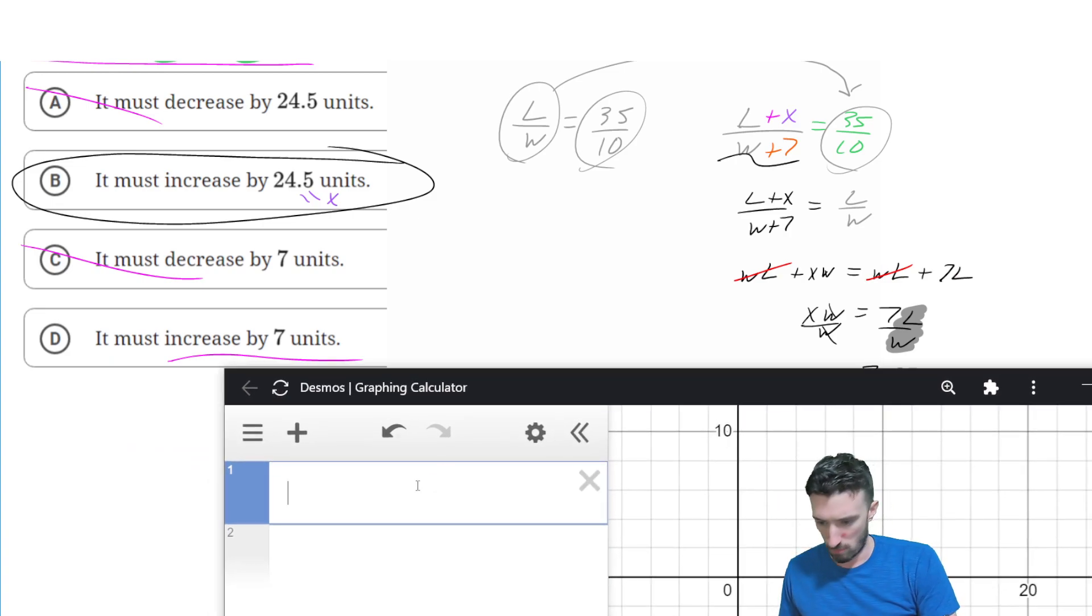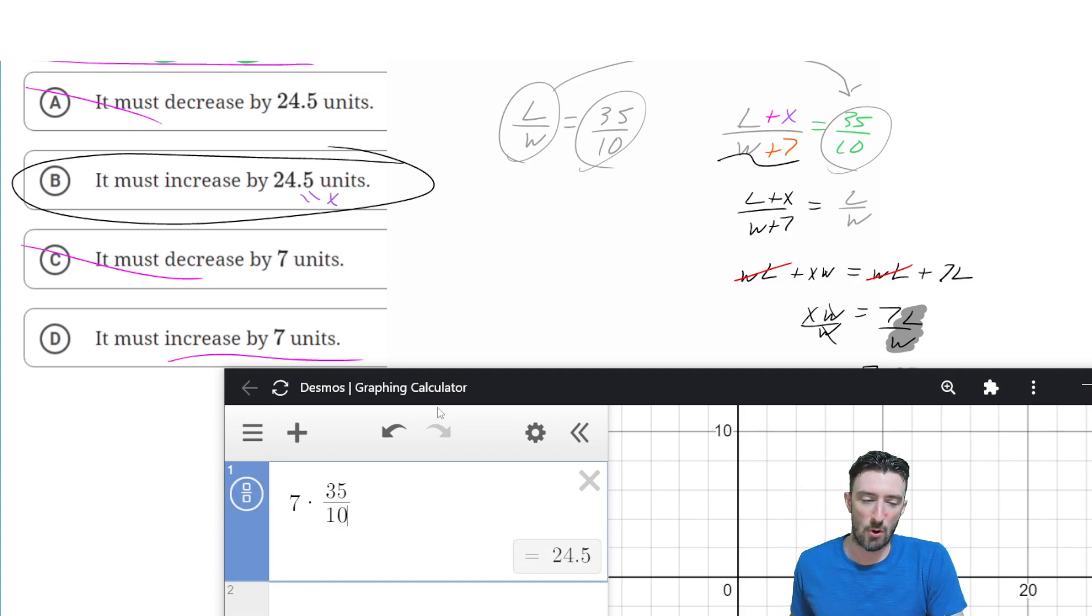Excuse me, sir. What is seven times 35 over 10? The answer is 24.5.